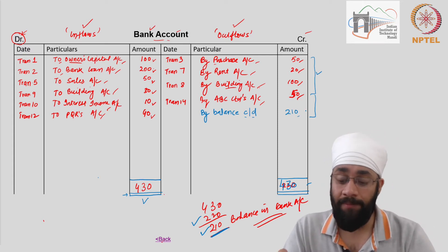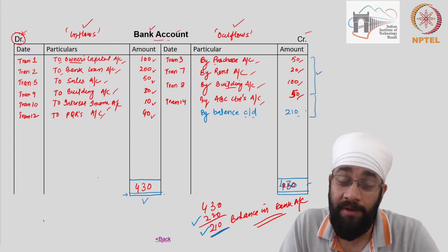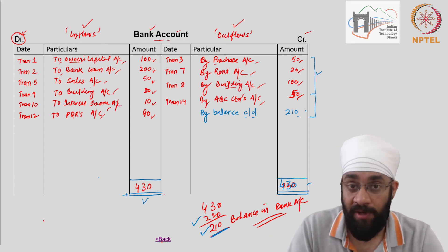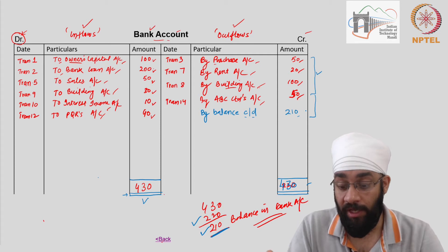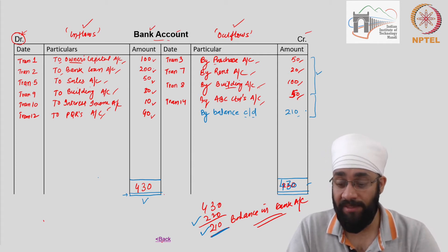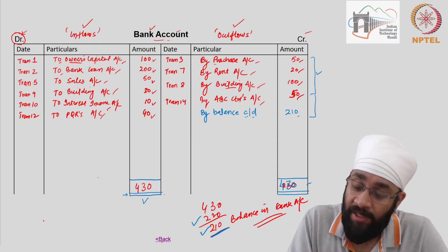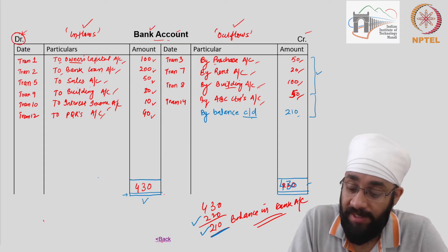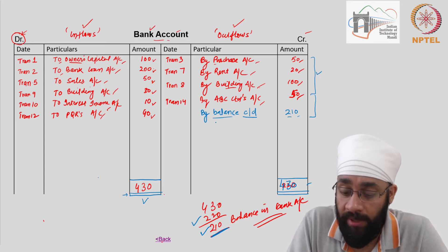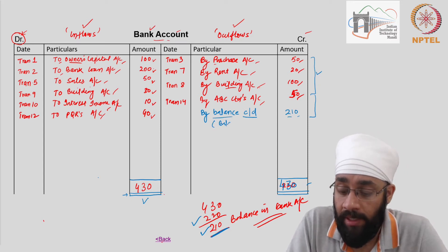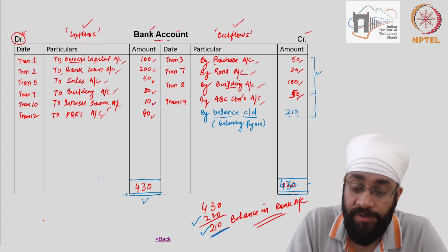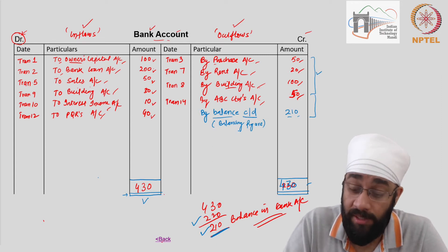We are going to carry the balance of 210 to the next period after the 14 transactions. So c/d stands for that — we are carrying this balance down after the 14 transactions. This 210 is the balancing figure. This does not come out of any transaction; this is the result of all the transactions.